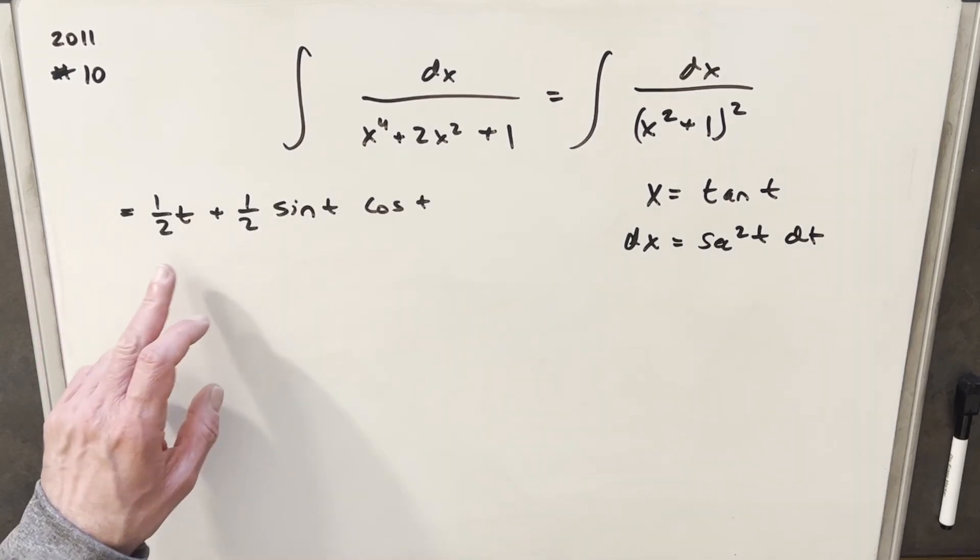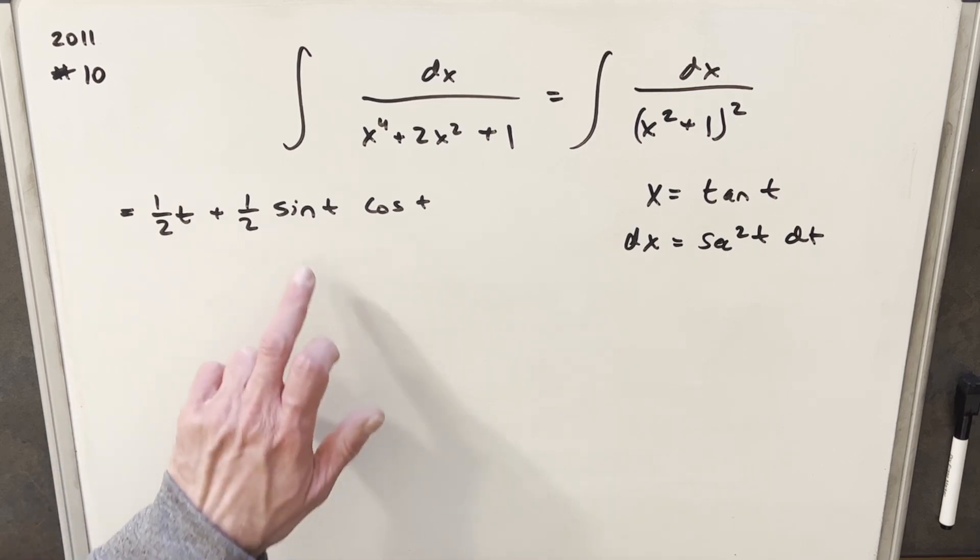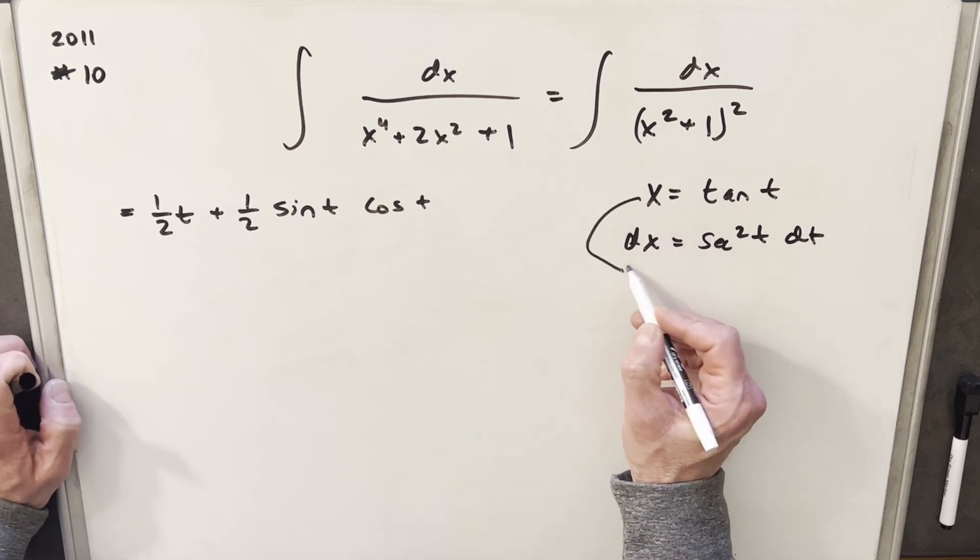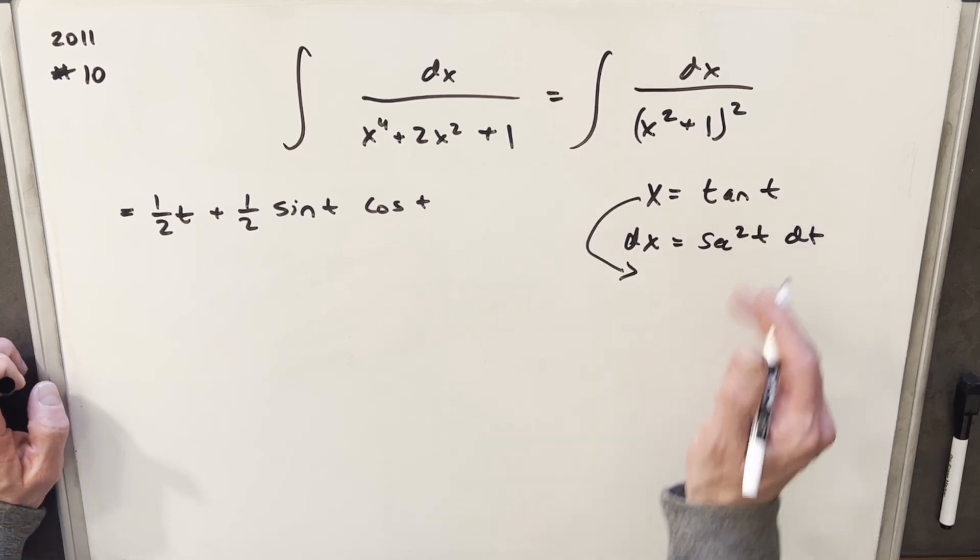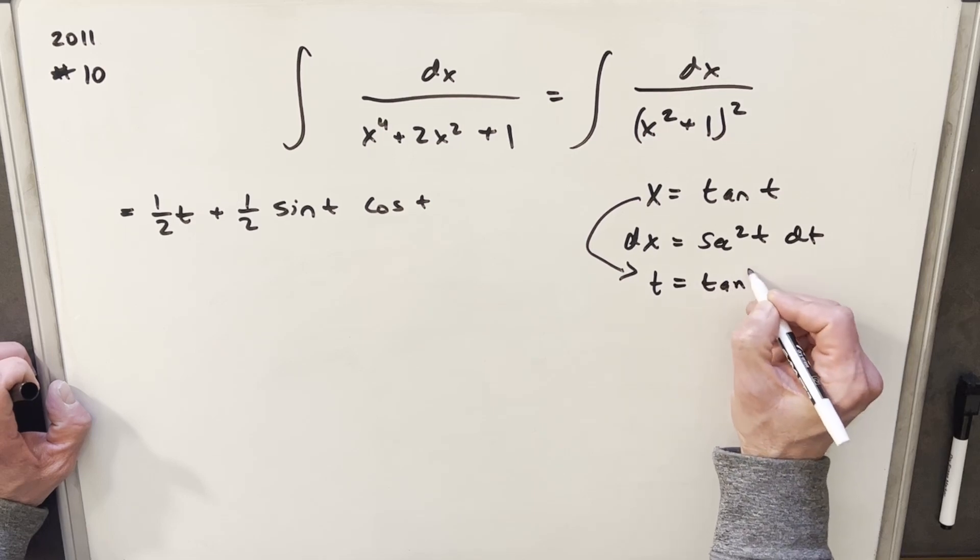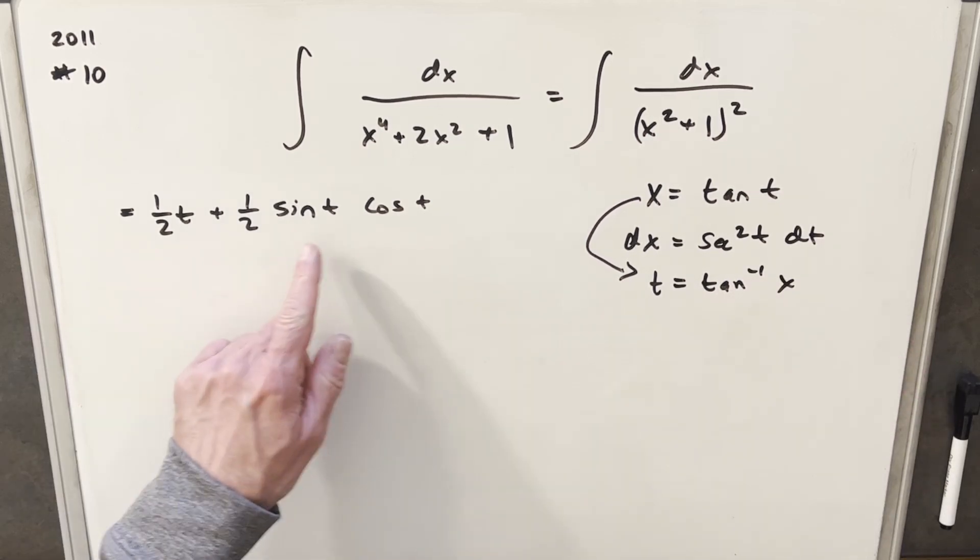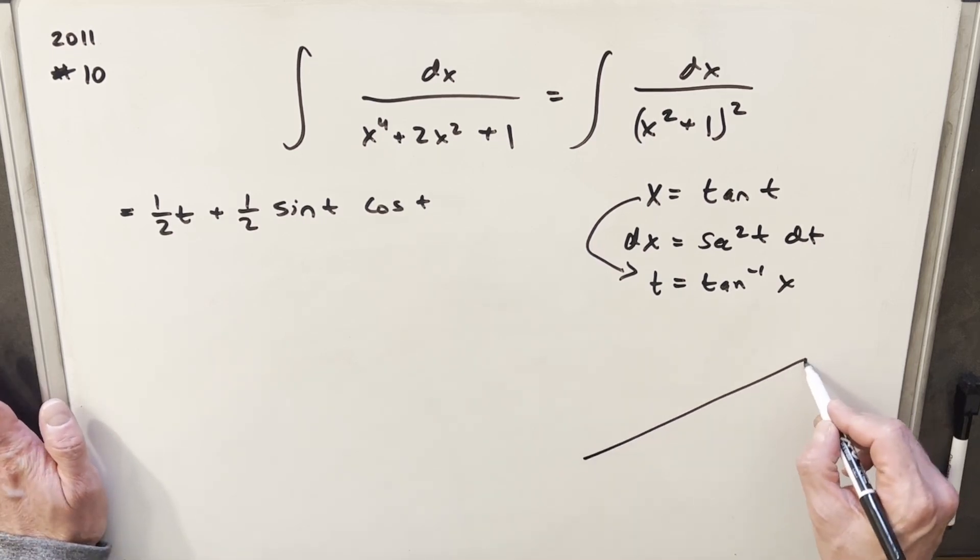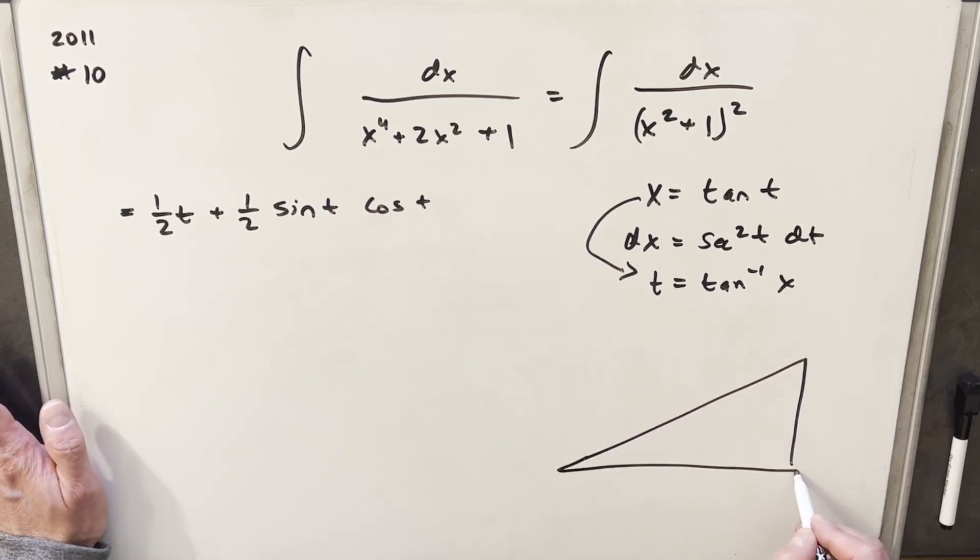But we have to figure out what these different values are of t, sine t, and cosine t. Now for t, it's easy because we can use the property of the inverse right here. From this equation, we can write this as t equals tan inverse of x. And now for sine t and cosine t, let's just draw our triangle and see if we can determine those values. So draw like a right triangle. The angle on this thing is going to be t.